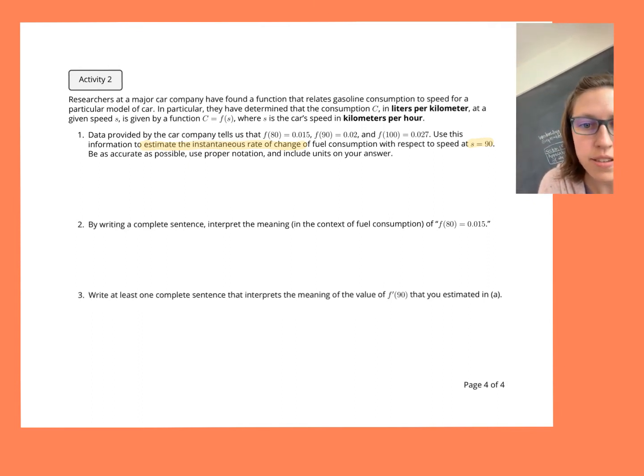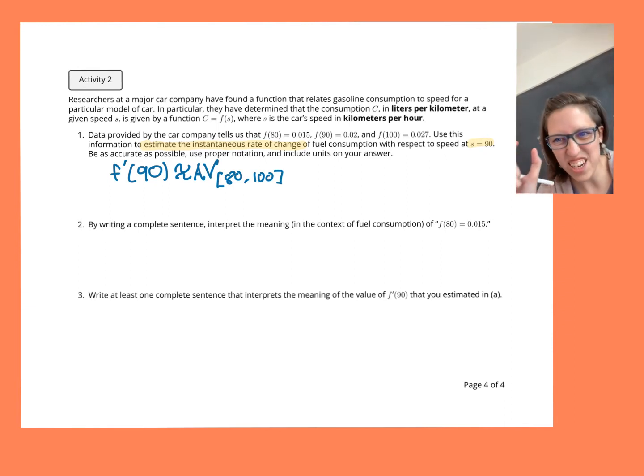Okay, so I'm going to estimate, well, what are we estimating here? We're really estimating F prime at 90, right? That's our shorthand for the instantaneous rate of change at S equals 90. And I don't want to say that it is equal to, I want to say that it is approximately equal to the average rate of change from 80 to 100, right? 90 is the center of that interval.